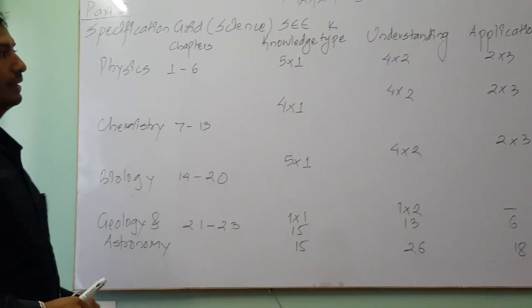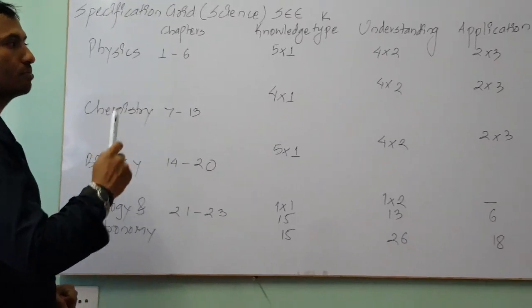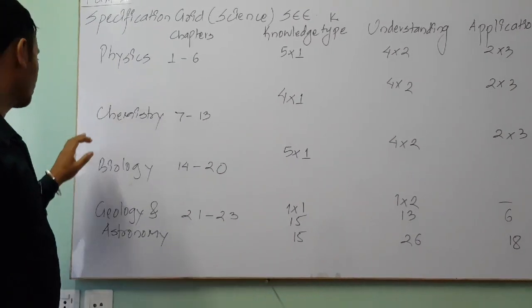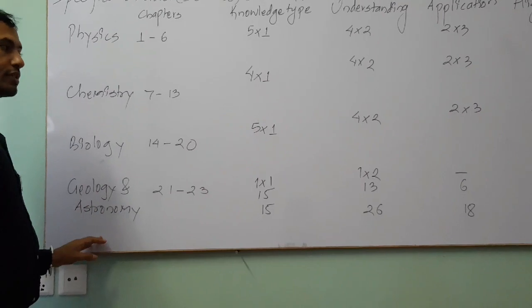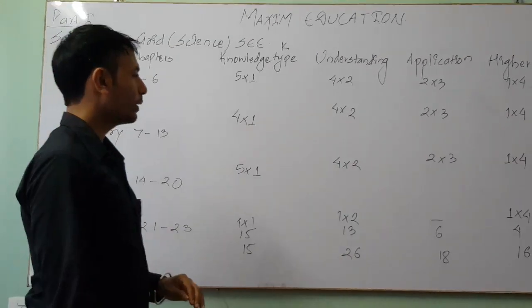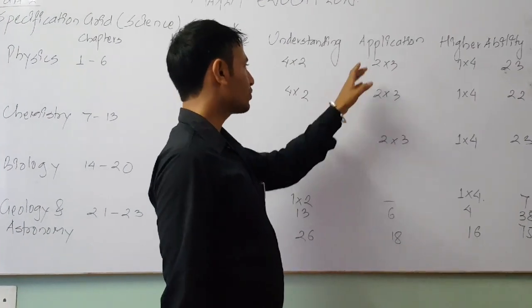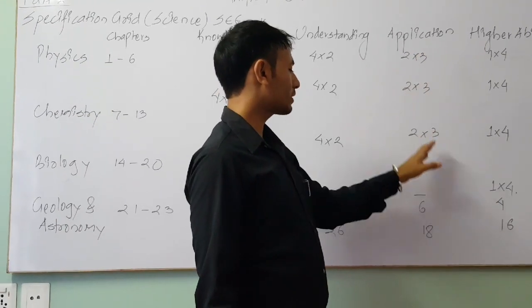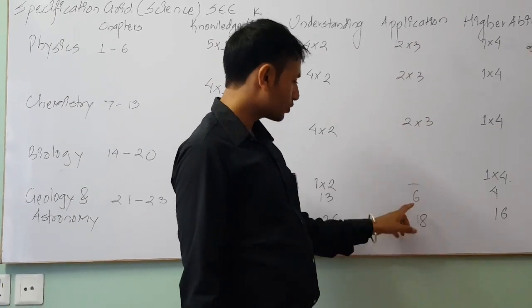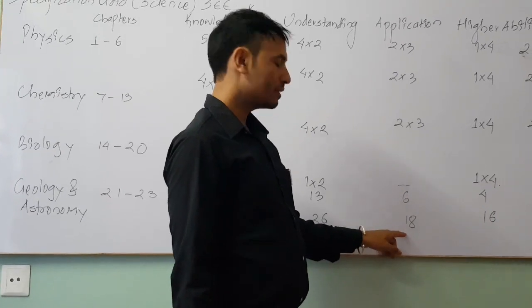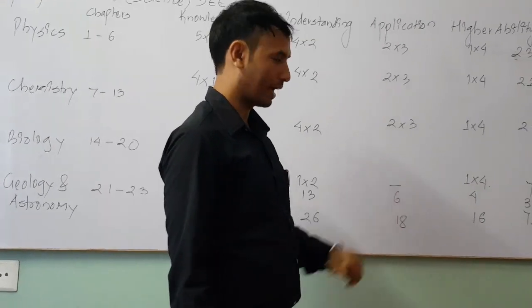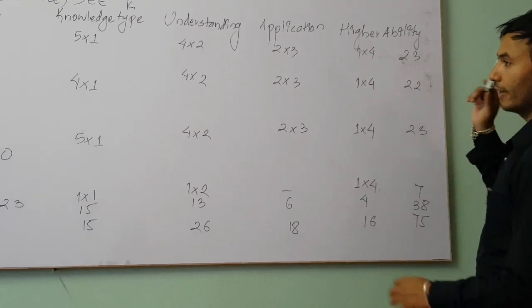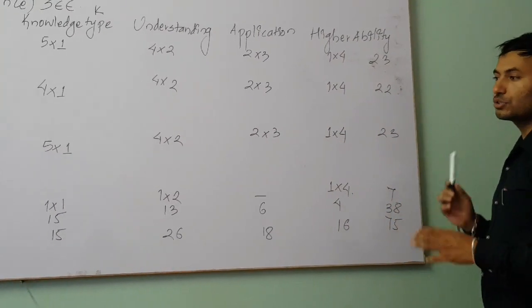Next is application — how the knowledge and understanding of the portion can be applied. Application-based questions are asked in physics, chemistry, and biology, but not in geology and astronomy. There will be 2 such questions in each of physics, chemistry, and biology, each carrying 3 marks, so altogether 6 questions for 18 marks.